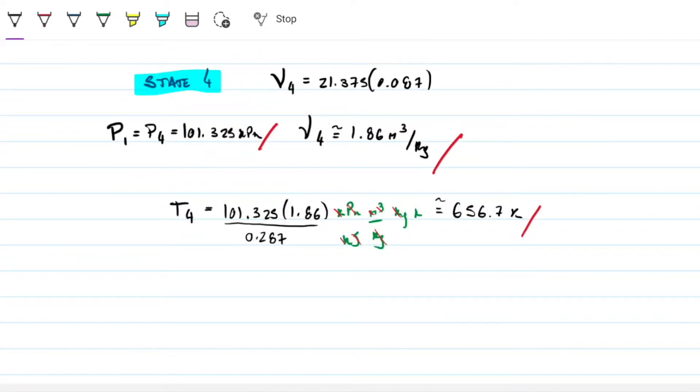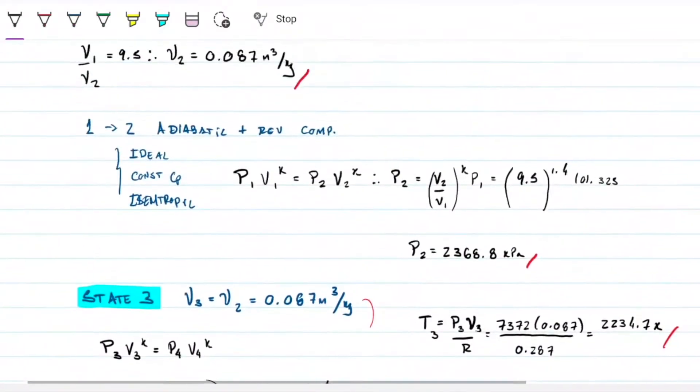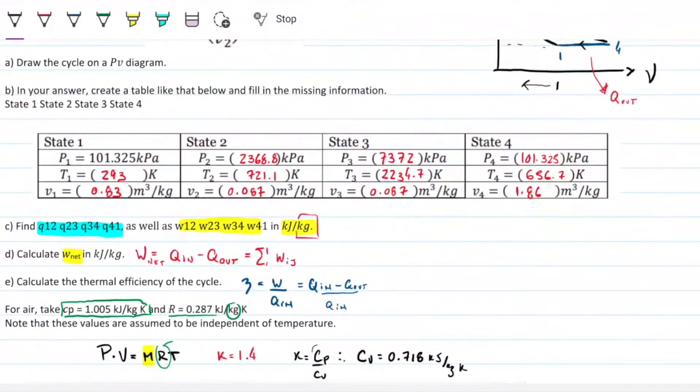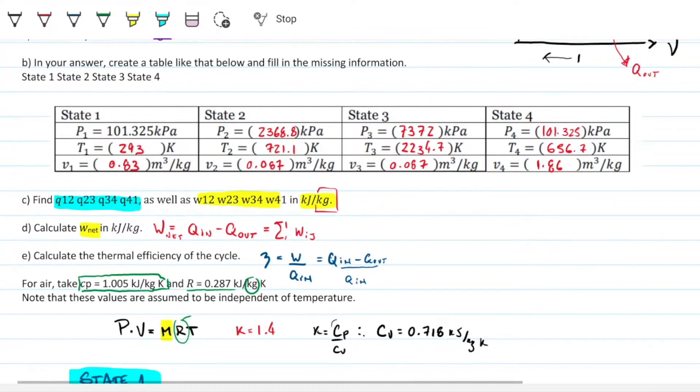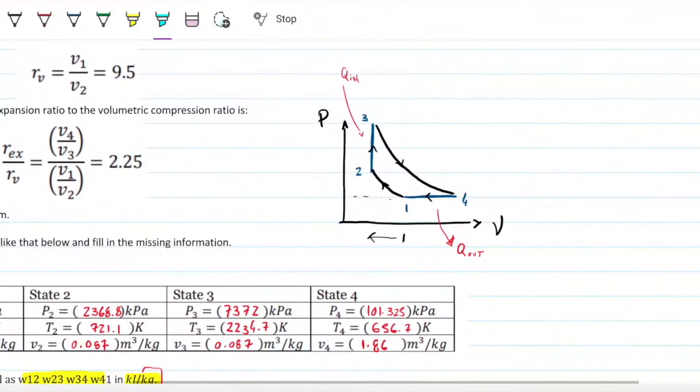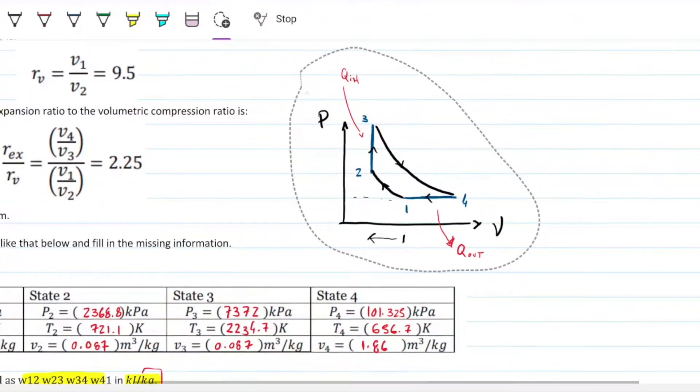Okay, so let us now move to part C, in which we're asked to calculate. So we need to find the heat and the work in all single transformations. Let's go ahead and copy this below here to have this as a reference.